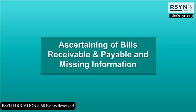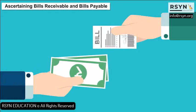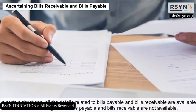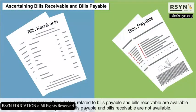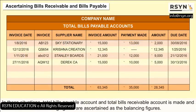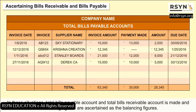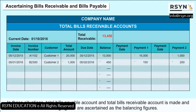Ascertaining Bills Receivable and Bills Payable: In certain situations, all the details related to bills payable and bills receivable are available. However, sometimes the figures of bills payable are not available. In these situations, a total bills payable account and a total bills receivable account is made, and the missing figures are ascertained as the balancing figures.